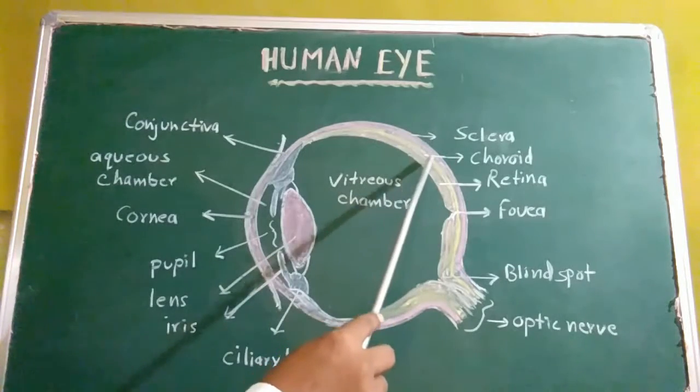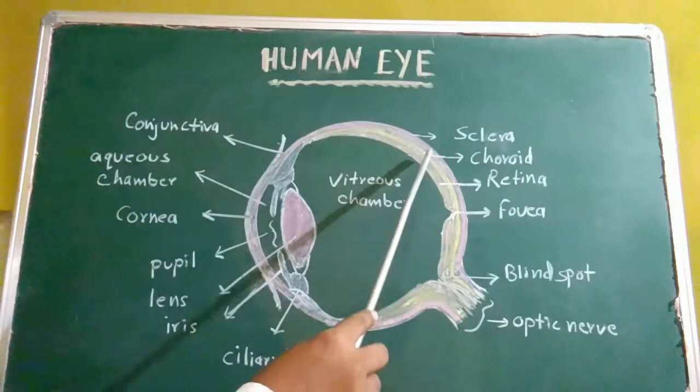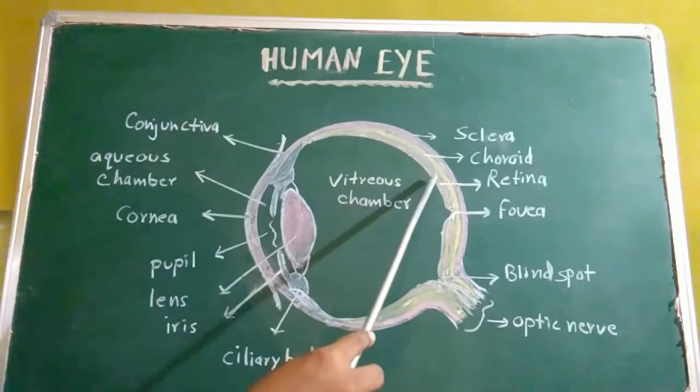The middle vascular coat, or choroid, contains many blood vessels. This layer is in contact with sclera. The blood vessels of the choroid nourish the retina.